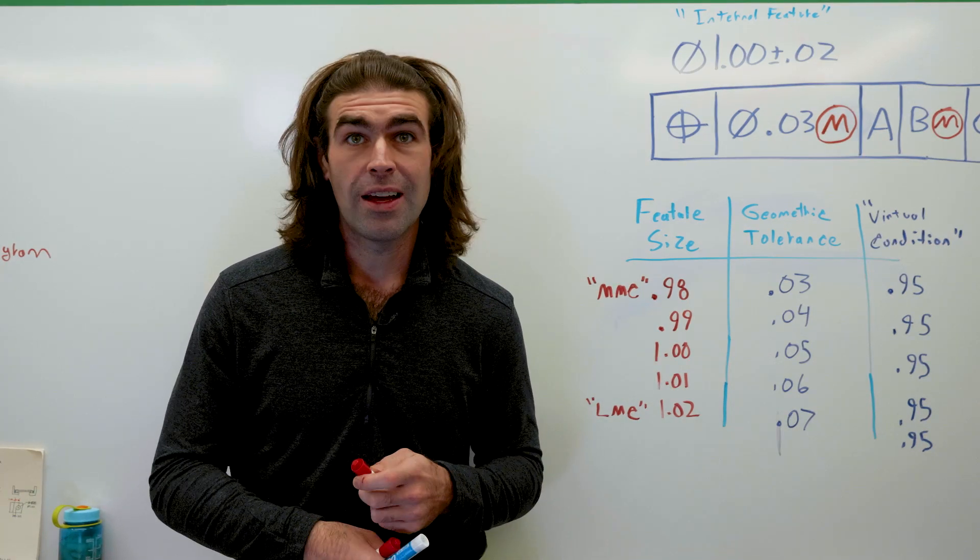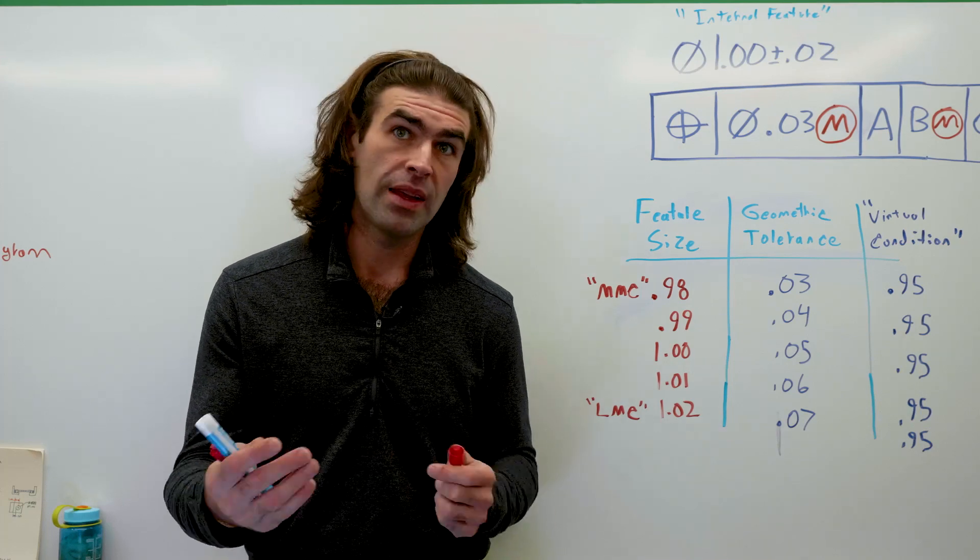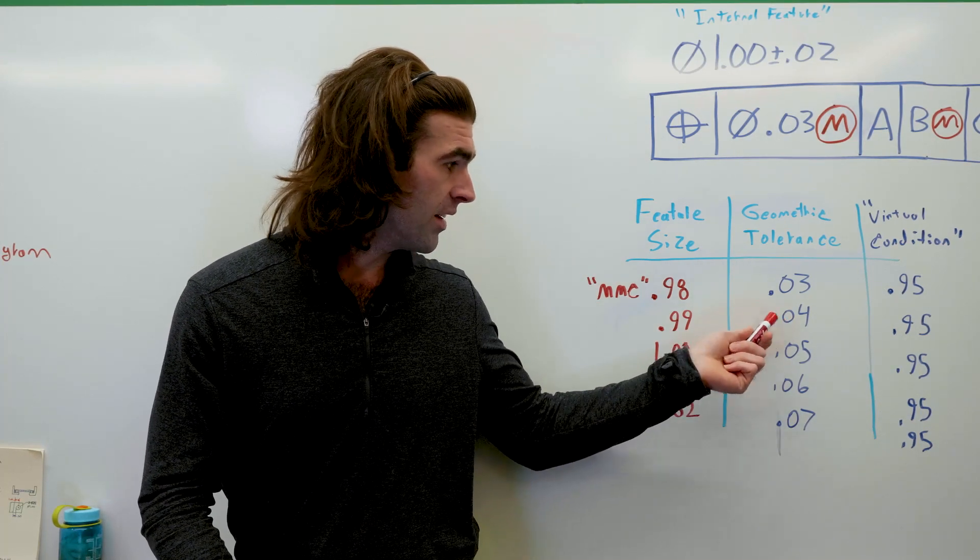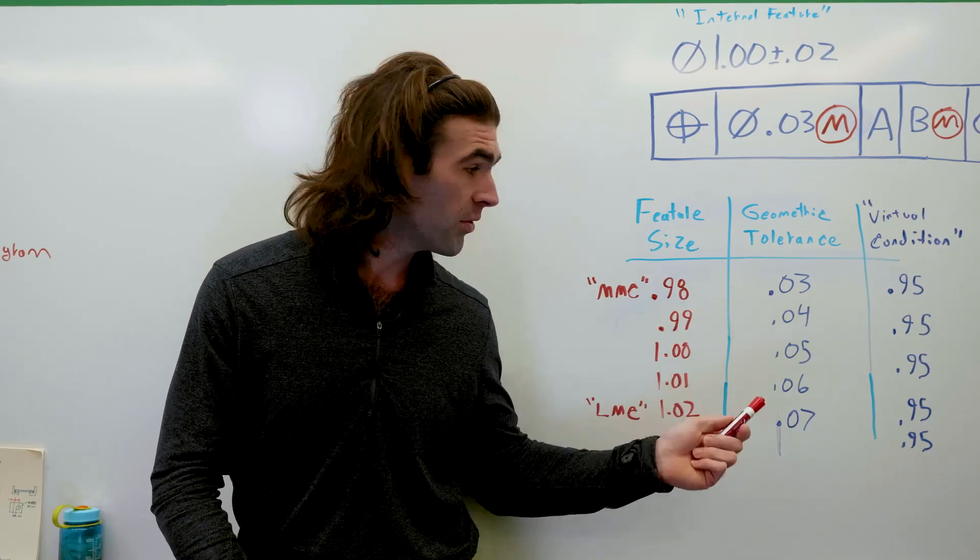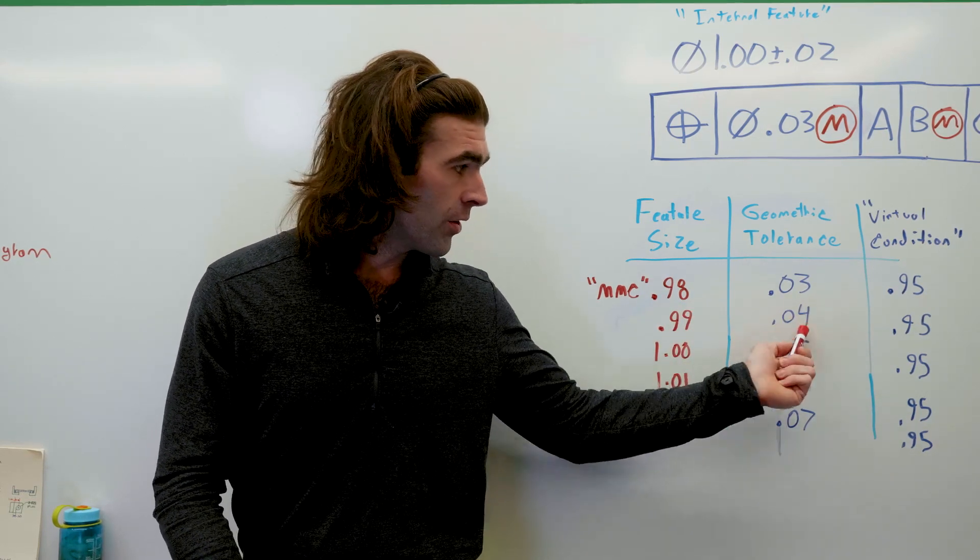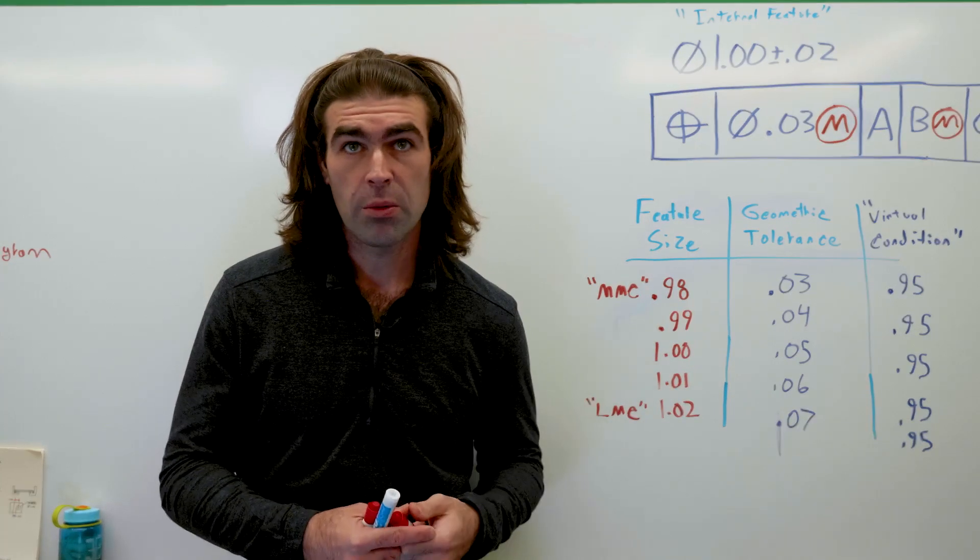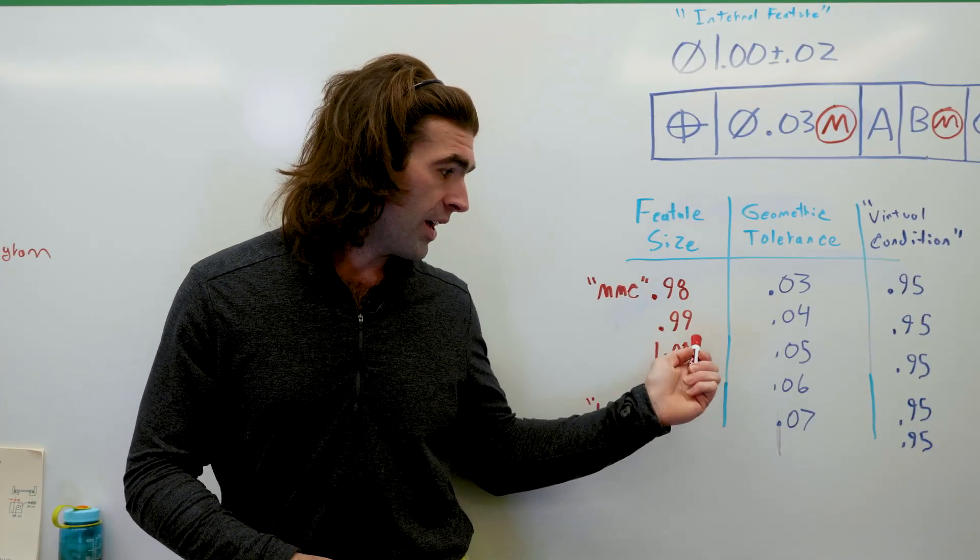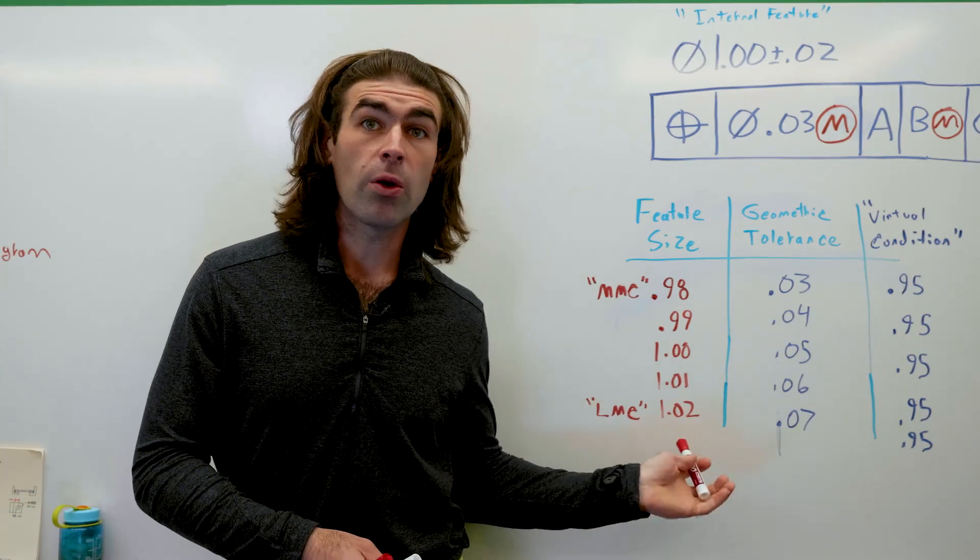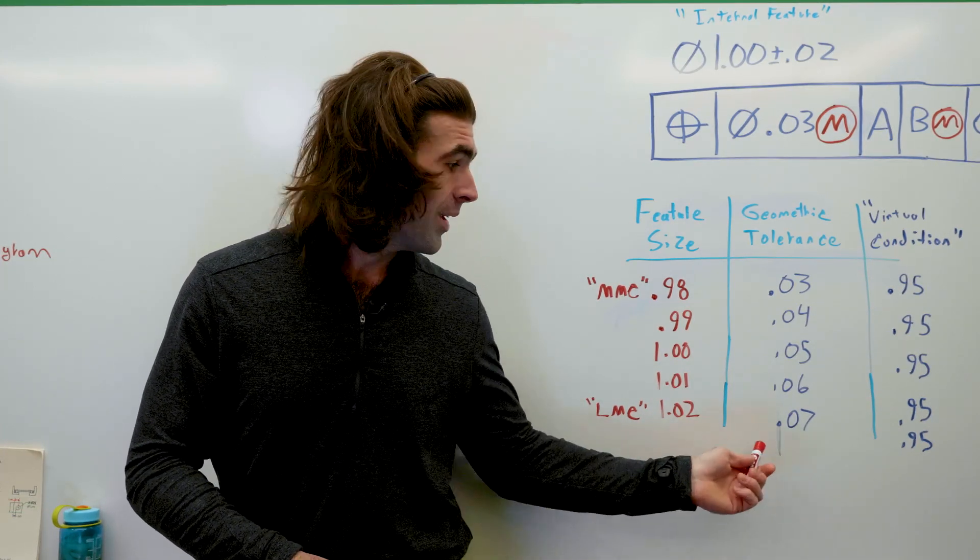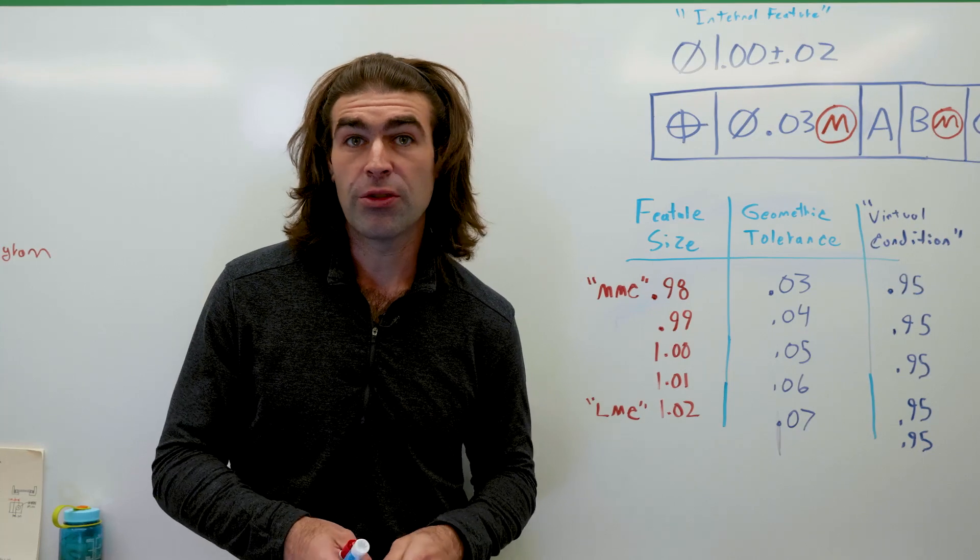you get more geometric tolerance equal to the difference between the actual size and the MMC. You can add 0.010. So we subtract actual size MMC. We can add that to the 0.030. We get the 0.040. And then we just keep going down as the hole goes up by 0.010. Every time the hole comes in at LMC, we get 0.070 of positional tolerance.